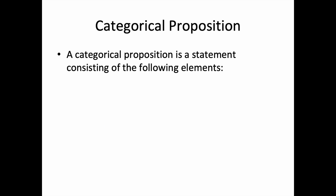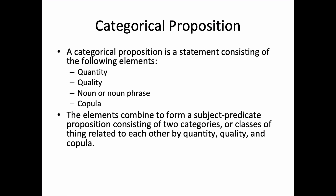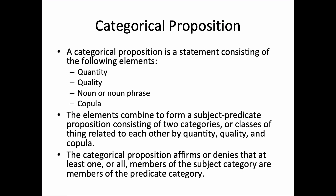A categorical proposition is a statement consisting of the following elements: quantity, quality, noun or noun phrase, and a copula. These elements combine to form a subject-predicate proposition consisting of two categories or classes of thing related to each other by quantity, quality, and a copula. The categorical proposition affirms or denies that at least one or all members of the subject category are members of the predicate category.